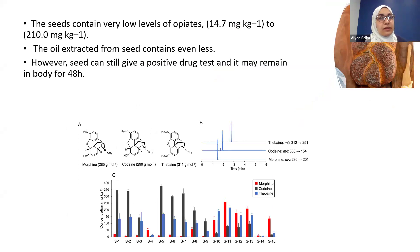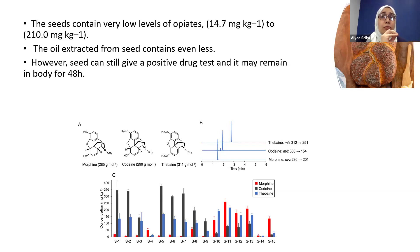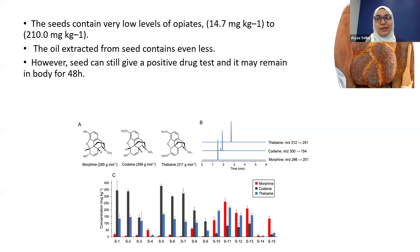While having breakfast with poppy seed spreads, have you ever guessed it might contain any of these alkaloids? It does contain trace amounts of opiates — ranging from approximately 14 milligrams per kilogram to 210 milligrams per kilogram. The extracted oil contains even less. However, these traces can still be detected in biofluids and give a positive drug test, so avoid these baked goods before a drug test.